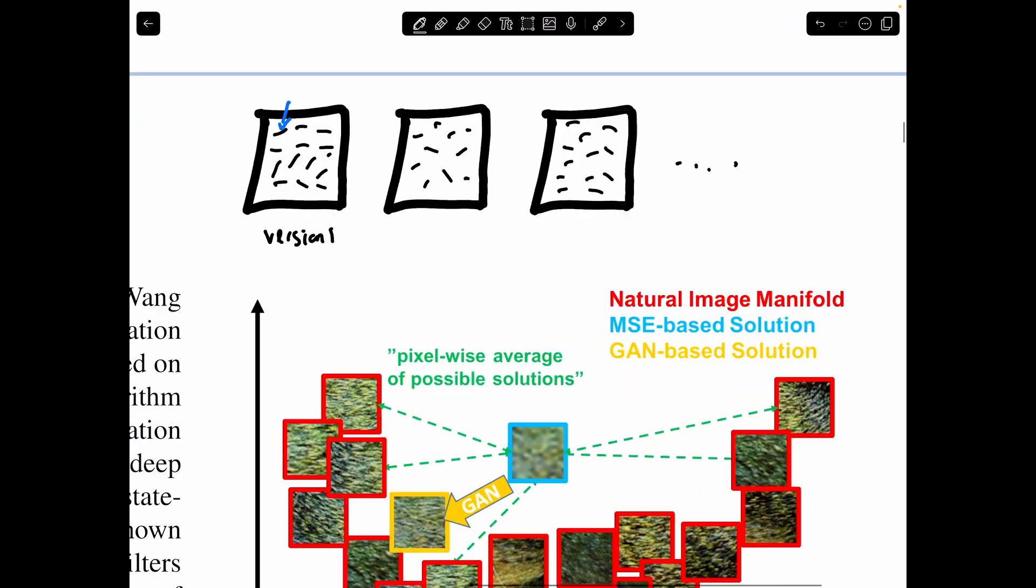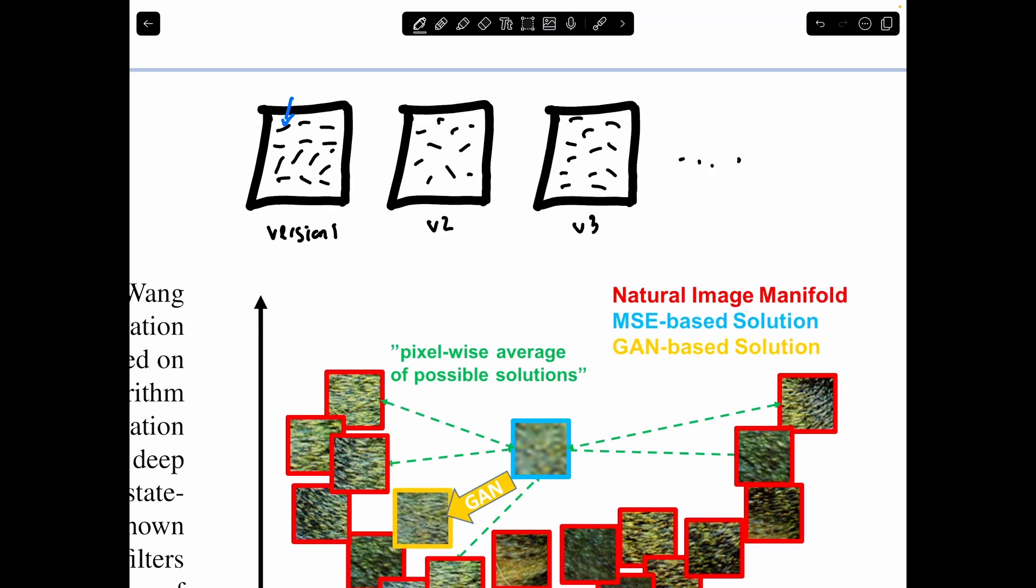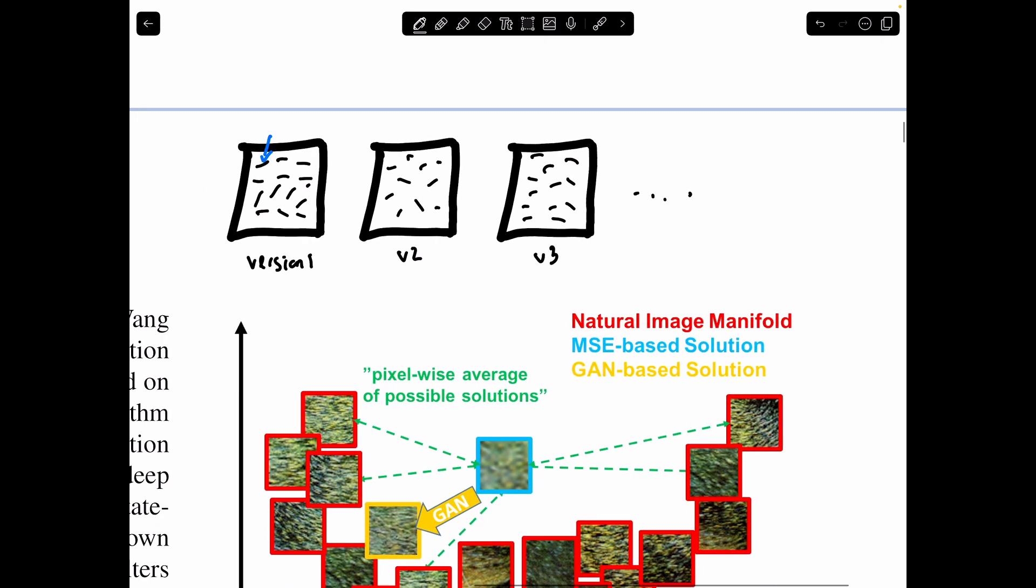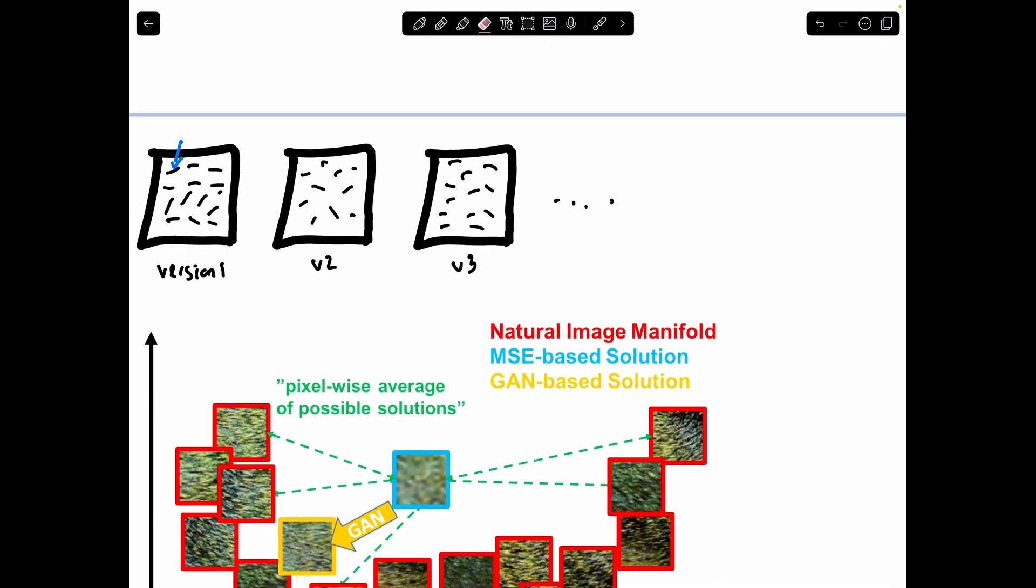So if you're a network and you're trying to learn a representation for this detail, this pattern, what you're going to end up learning if you use mean squared error is just average. So you're just going to learn an average. And it's just going to be blurry, something like this, right? Because at some point, these things will be in every possible position. And so it's not going to learn this detail, it's just going to learn a mean.